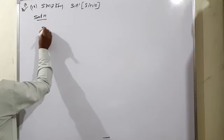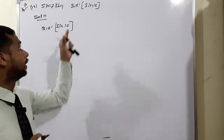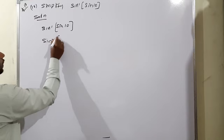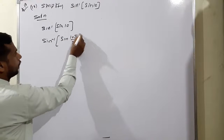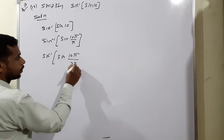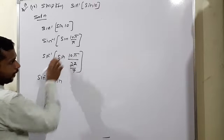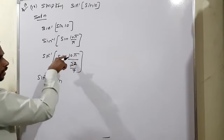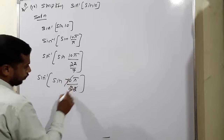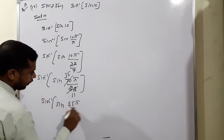Rewriting the question: sin inverse of sin 10. In the last three subdivisions, pi was an important value, but here there is no pi. So we add pi to numerator and denominator: sin inverse of sin(10π/π). We can write denominator π as 22/7. Taking the reciprocal, 7 comes to numerator: 10 × 7 = 70, giving us 70/22, which simplifies to 35/11. So sin inverse of sin(35/11).